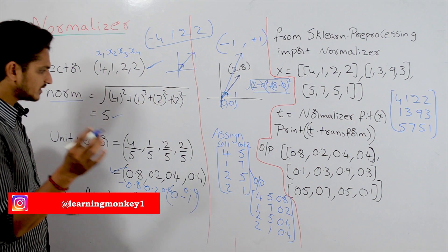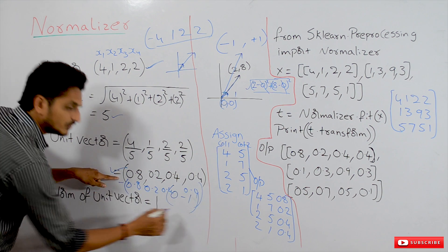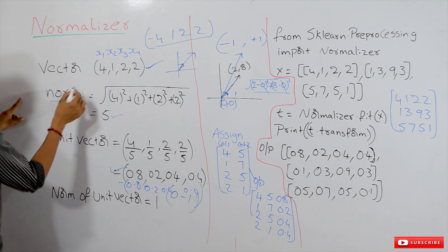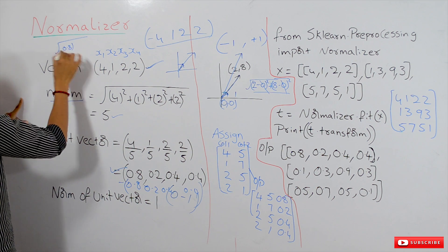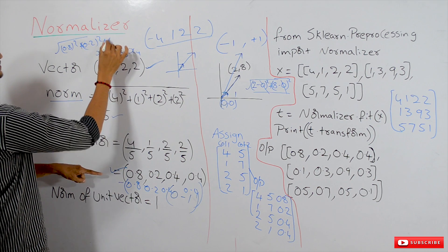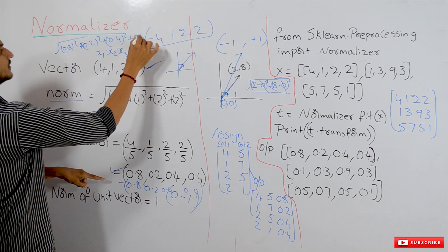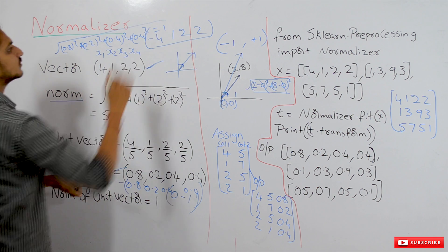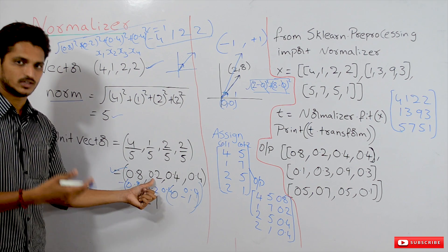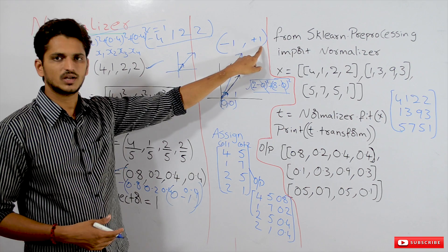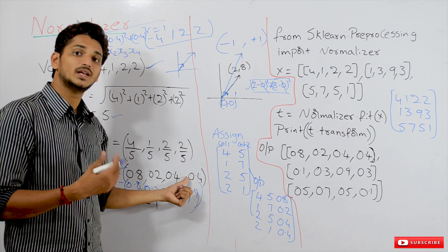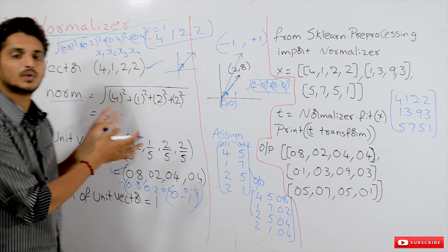One more important point to remember: the norm of a normalized data — that is, the norm of the unit vector — is 1. That is: square root of (0.8 squared plus 0.2 squared plus 0.4 squared plus 0.4 squared) equals 1. The normalized data comes out between minus 1 and plus 1, and if you find the norm of that normalized data, you will get 1. This is what normalizing means.